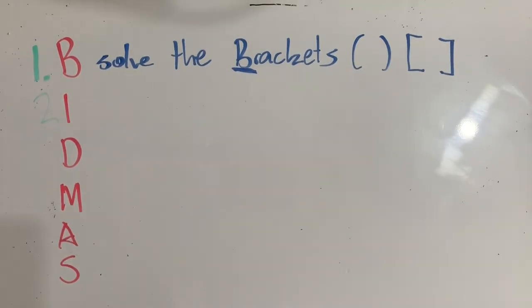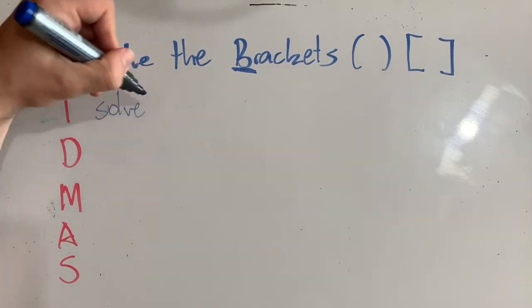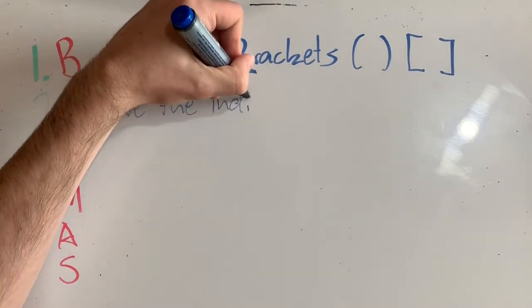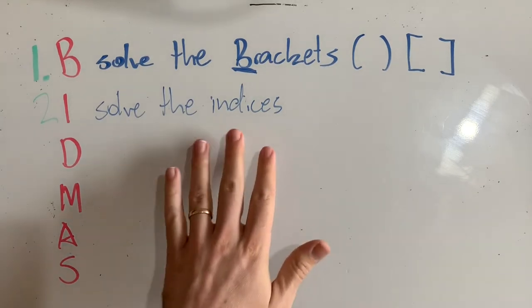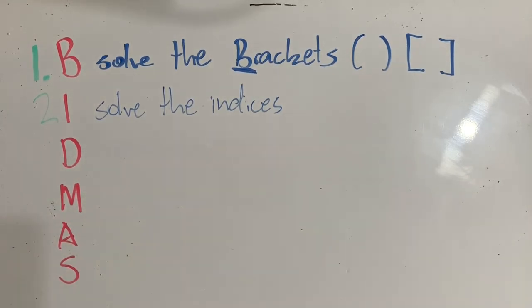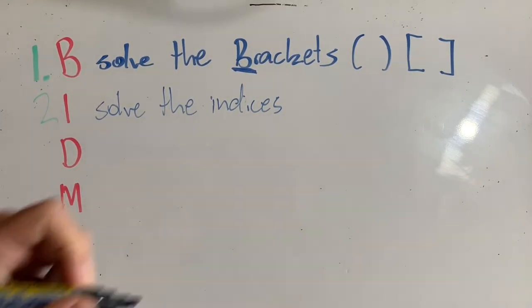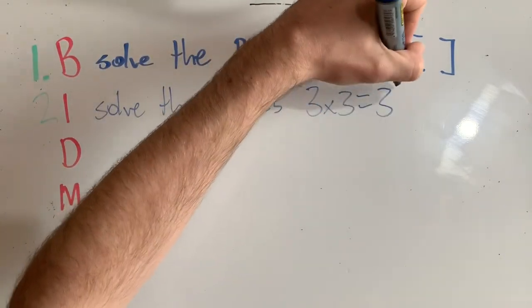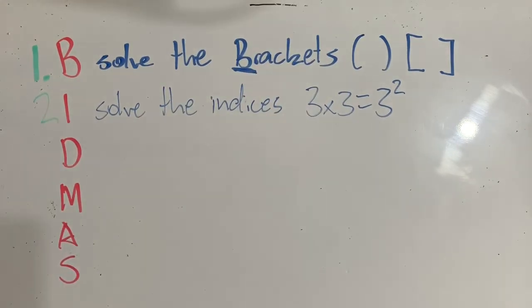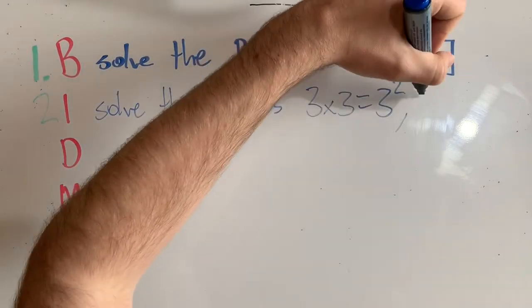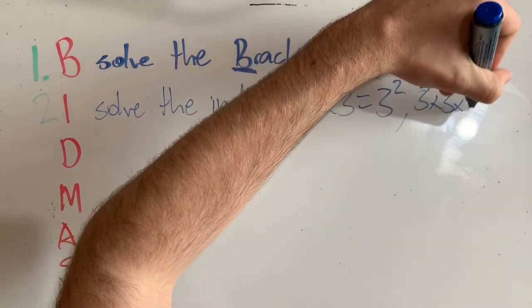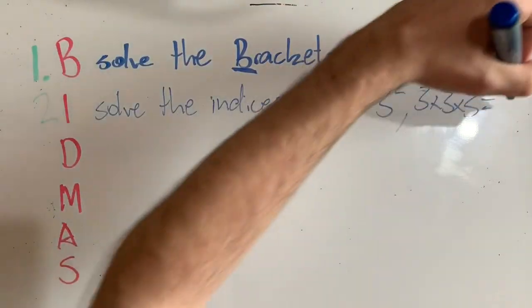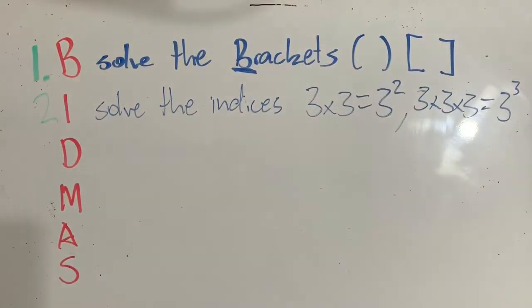The second step is indices. So we then want to solve the indices. And an index or indices are just a way of writing repeated multiplication. For example, 3 times 3 can be written as 3 to the power of 2 or 3 squared. Similarly, 3 times 3 times 3 is also the same as writing 3 to the power of 3 or 3 cubed.